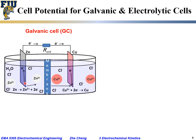On the zinc electrode, the zinc metal gives out electrons to form Zn²⁺ ions that dissolve into solution. On the other side, Cu²⁺ ions combine with the electrons released by the zinc electrode to form copper metal and deposit onto the copper. For the zinc side in a galvanic cell, this is oxidation — the anodic half-cell reaction. The copper side undergoes reduction — the cathodic half-cell reaction.